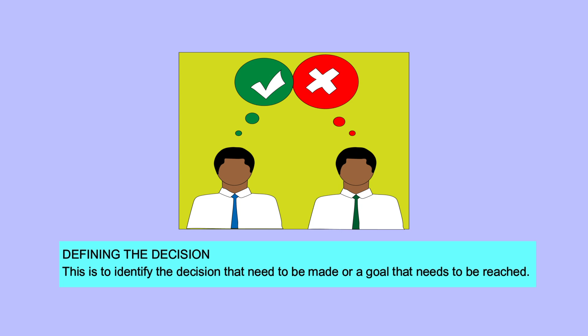Step 1 — Defining the decision: This is to identify the decision that needs to be made or the goal that needs to be reached.